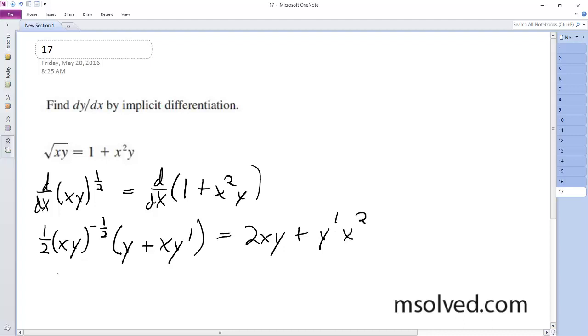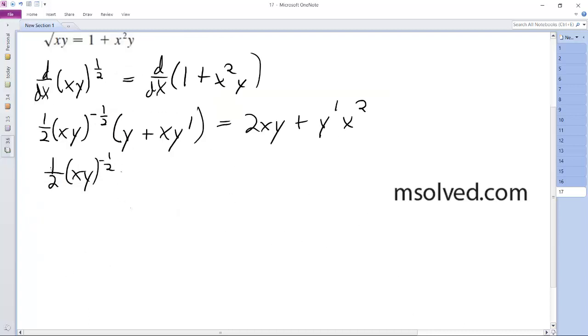Okay, and then, so I have to distribute this so I can isolate the y prime. So I have y, 1/2 y, (xy)^(-1/2) times y, and then plus 1/2(xy)^(-1/2) xy' is equal to 2xy plus y' x².